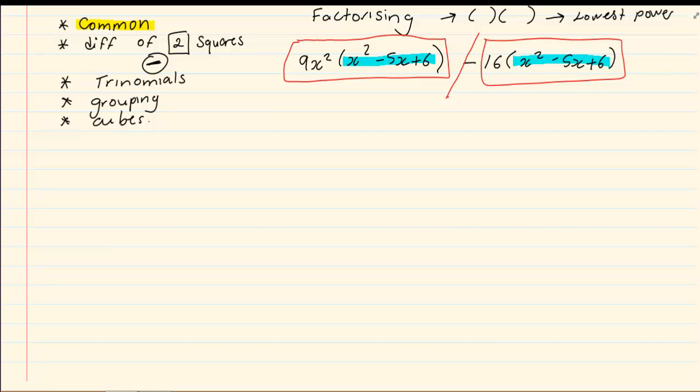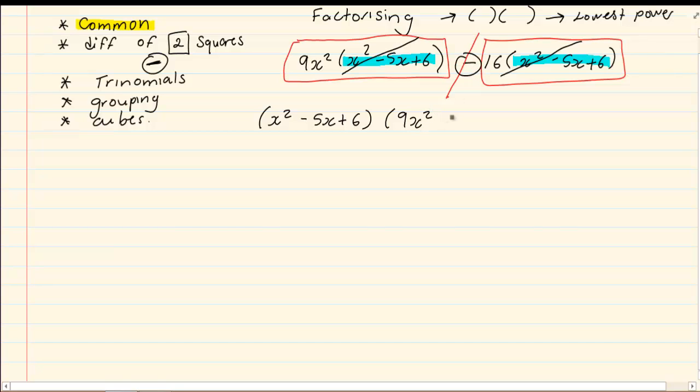The part that is the same is this entire x squared minus 5x plus 6. So, when we are taking out a common, we are looking at each term and we are taking out what is the same. So, I have got x squared minus 5x plus 6. After I have taken out the common, what is left in each block? What is left in each term? In the first one, I have got 9x squared. Then, I have got my sign minus. And in the second one, I have 16.